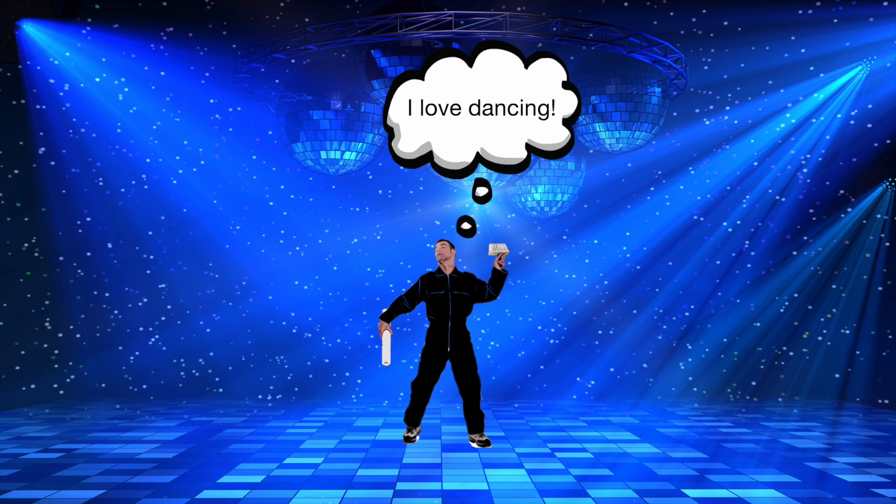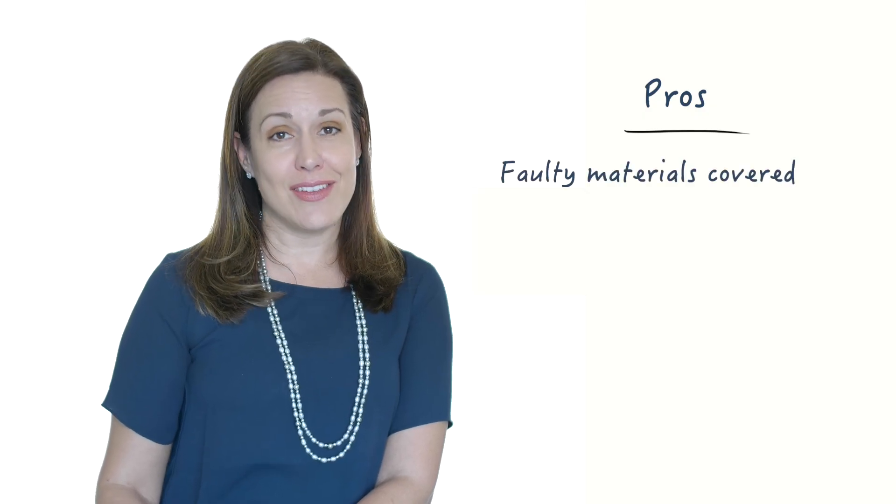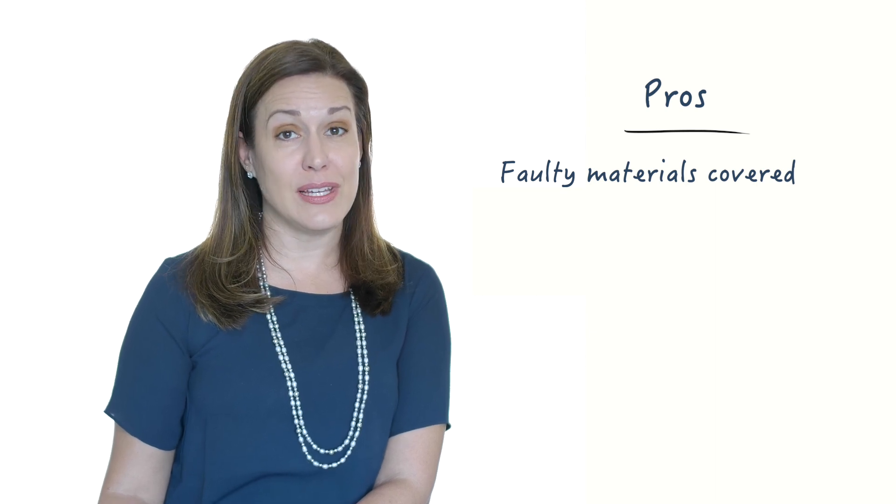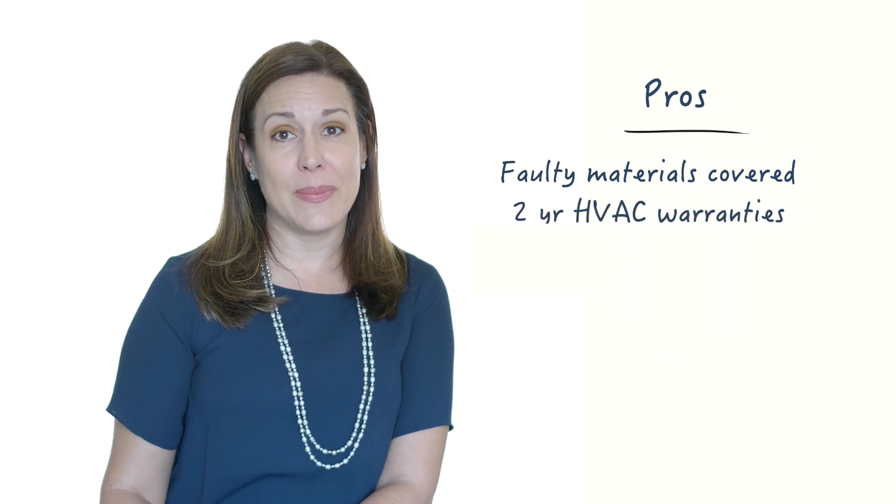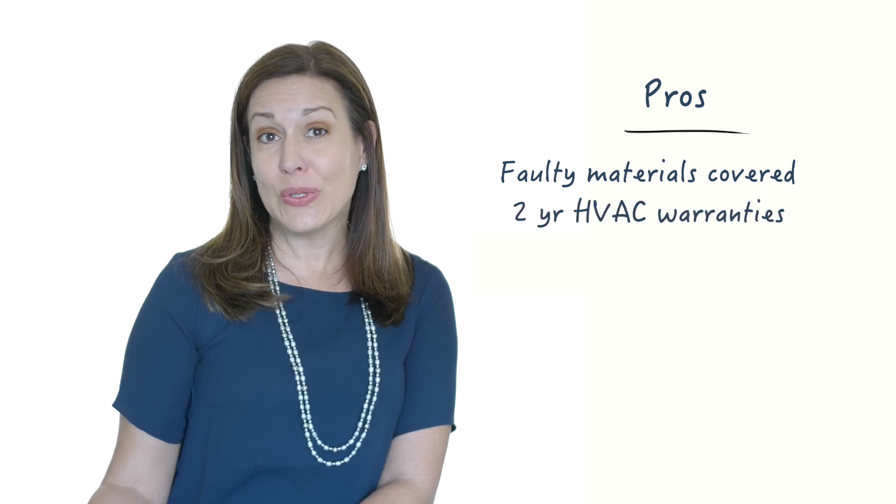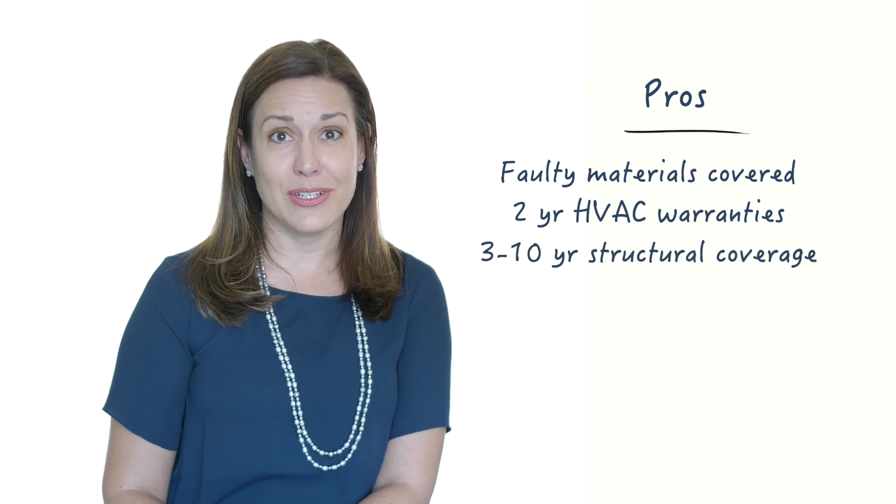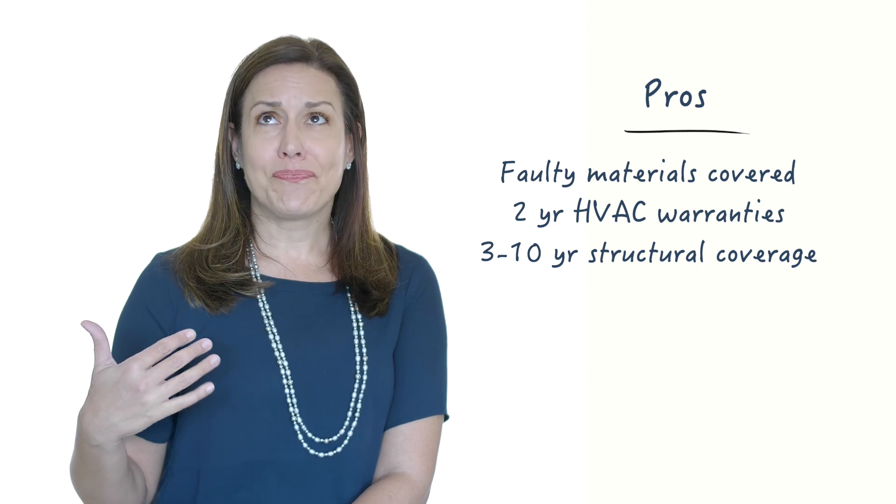...big one is all the warranties that come along with a new house. When building a new home, you get a new construction home warranty, which means everything is covered for the first year from defective materials or faulty installation. Then for the first two years, all the plumbing, heating, mechanical, and cooling systems are under warranty. And years three through ten, all the structural components are under warranty.